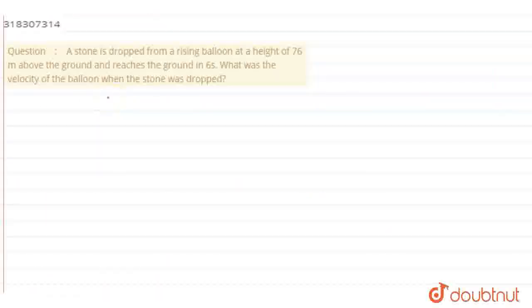What is the question? A stone is dropped from a rising balloon at a height of 76 meters above the ground and reaches the ground in 6 seconds. What is the velocity of the balloon when the stone is dropped?